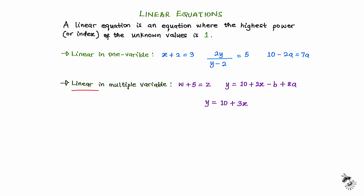As for linear equations in multiple variables, we have the example w plus 5 equals z. Looking at this example, we have the first unknown value w and the second unknown value z. Checking the power of these unknown variables, the power of w is 1 and the index of z is also 1. Hence this equation is linear. But because we have more than one unknown variable — namely w and z — we say this equation is linear in multiple variables.